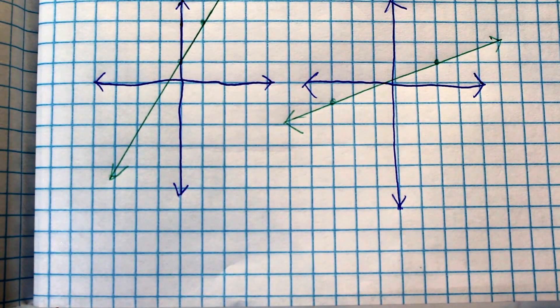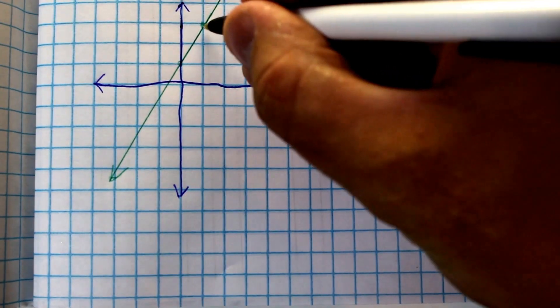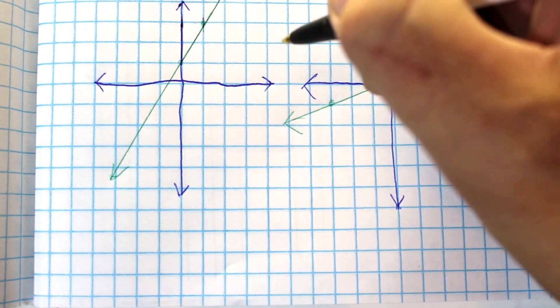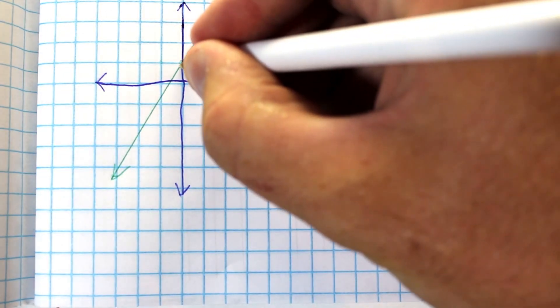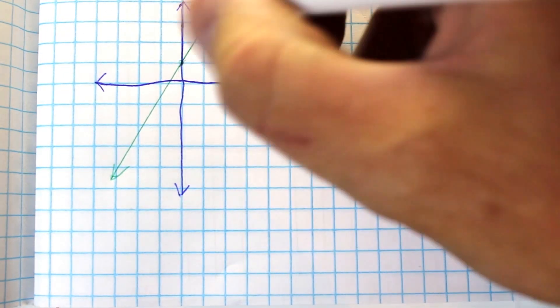So here are a few graphs with lines that we'll use to find the slope. What you want to do when you encounter this is find, sometimes there will be points on the axis where it crosses right here, and sometimes there won't.